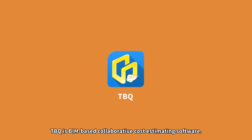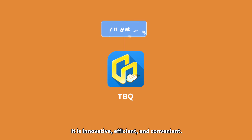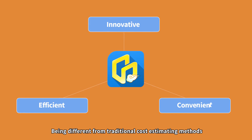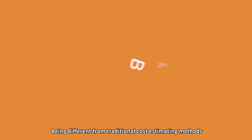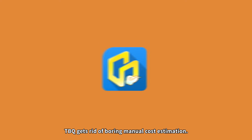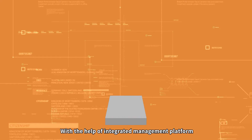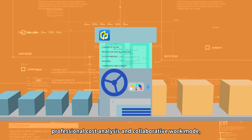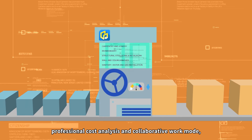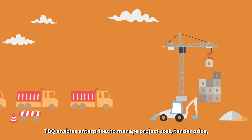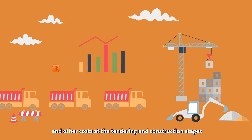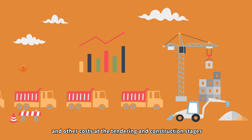TBQ is beam-based collaborative cost estimating software. It is innovative, efficient, and convenient. Being different from traditional cost estimating methods, TBQ gets rid of boring manual cost estimation. With the help of an integrated management platform, professional cost analysis, and collaborative work mode, TBQ enables enterprises to manage project costs, tender price, and other costs at the tendering and construction stages.